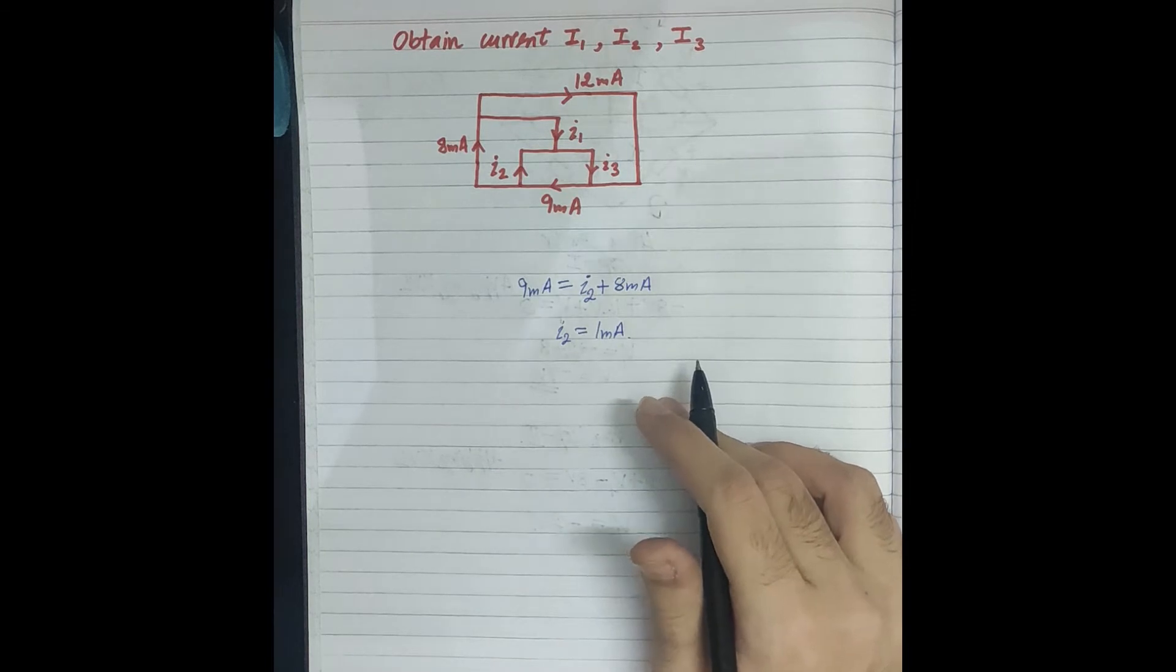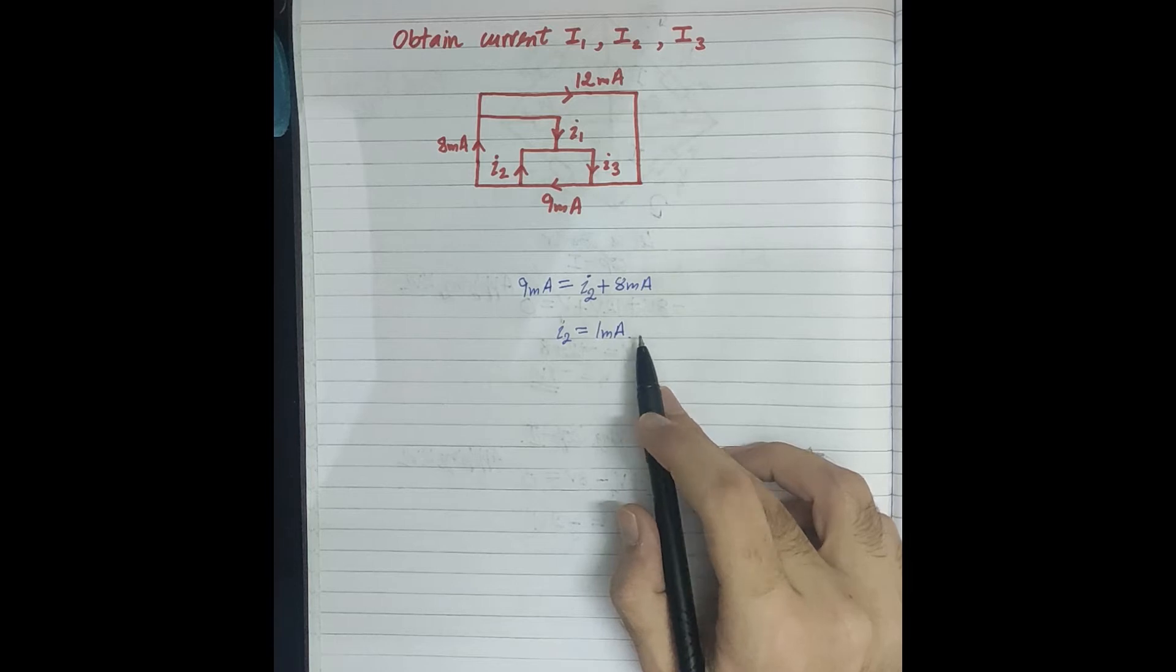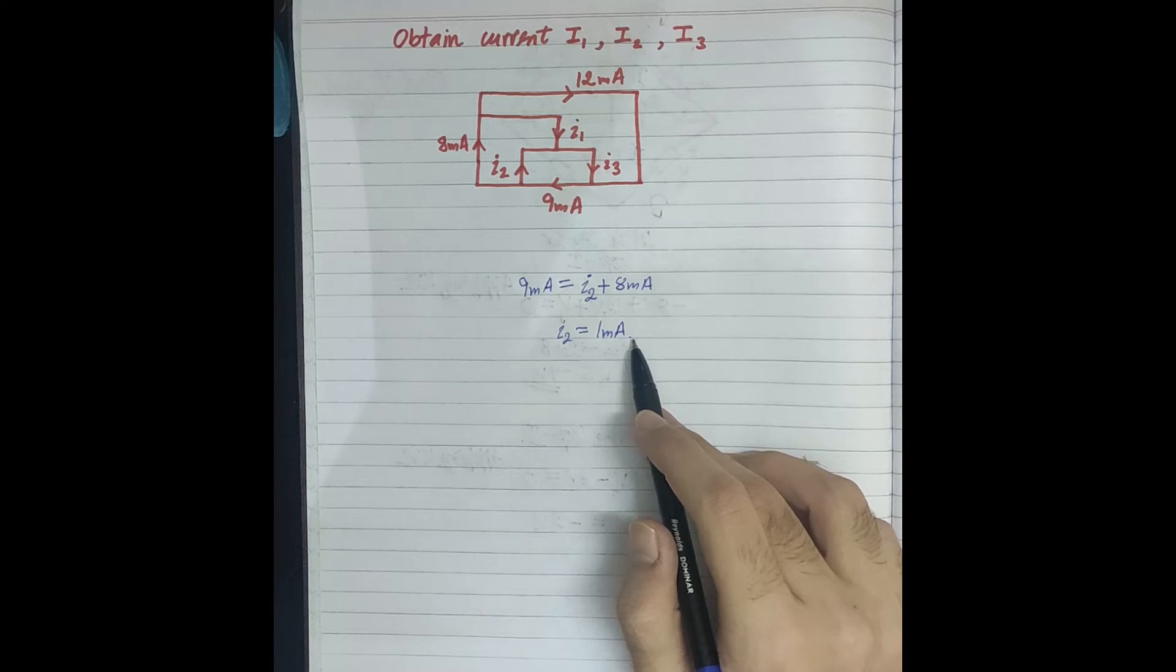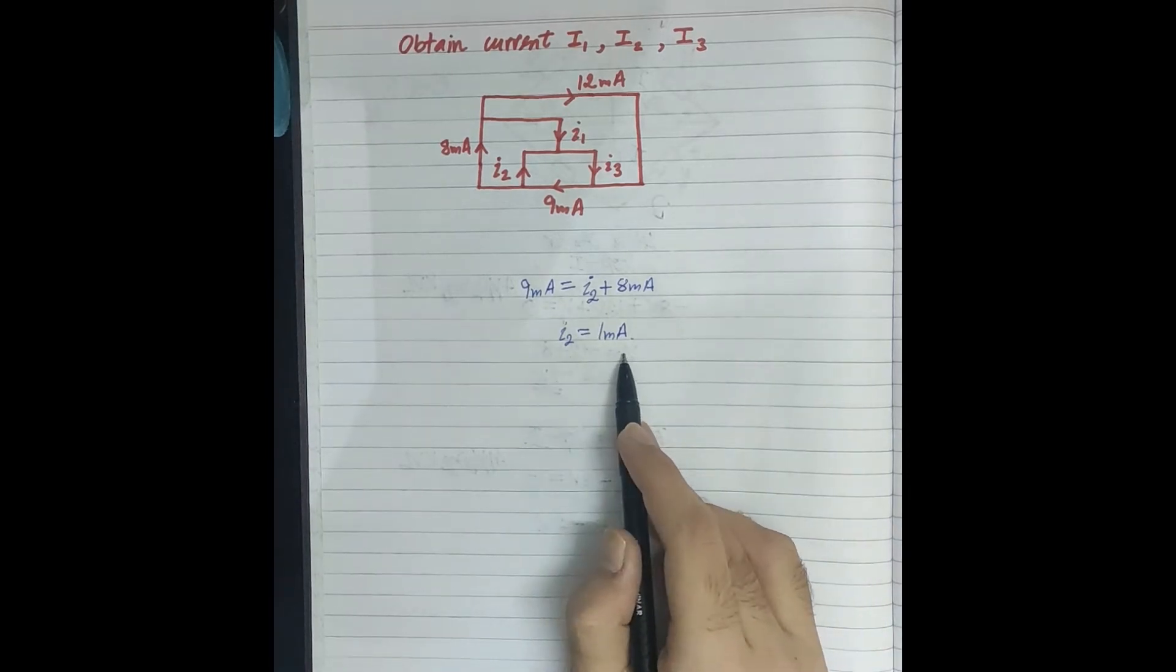KVL and KCL questions are very easy, but when we have complex circuits, they are also very important. Applying them is easy; we just have to take the right sign and direction. We have calculated I2, which is 1 mA.